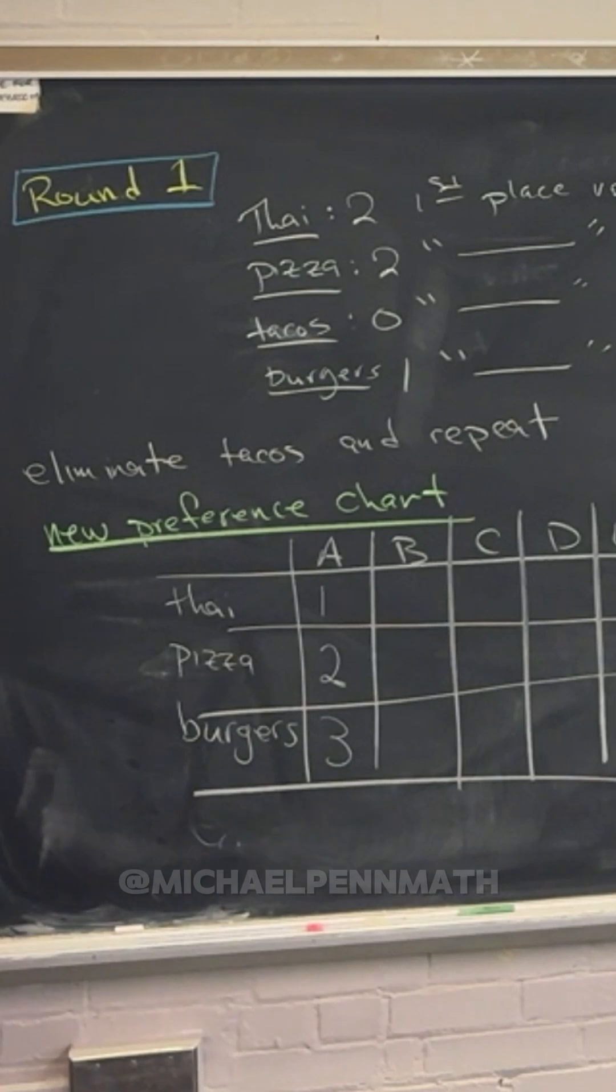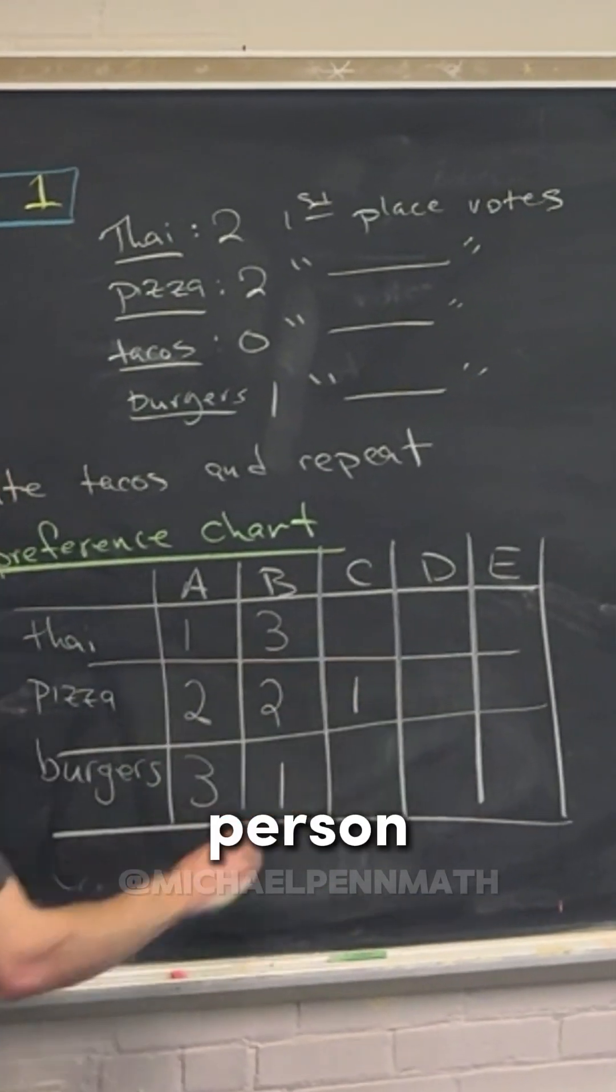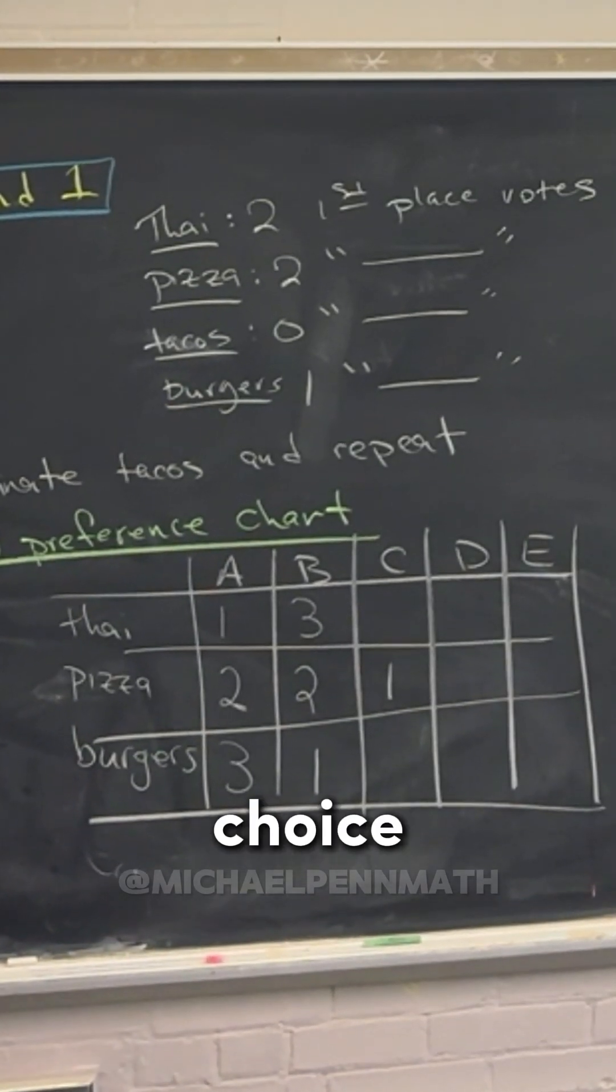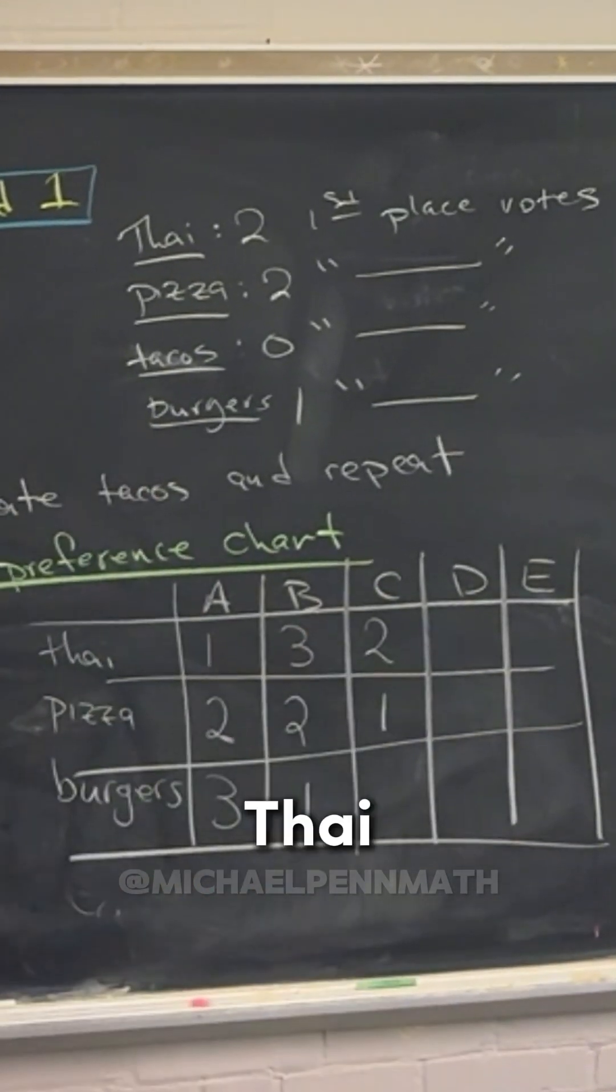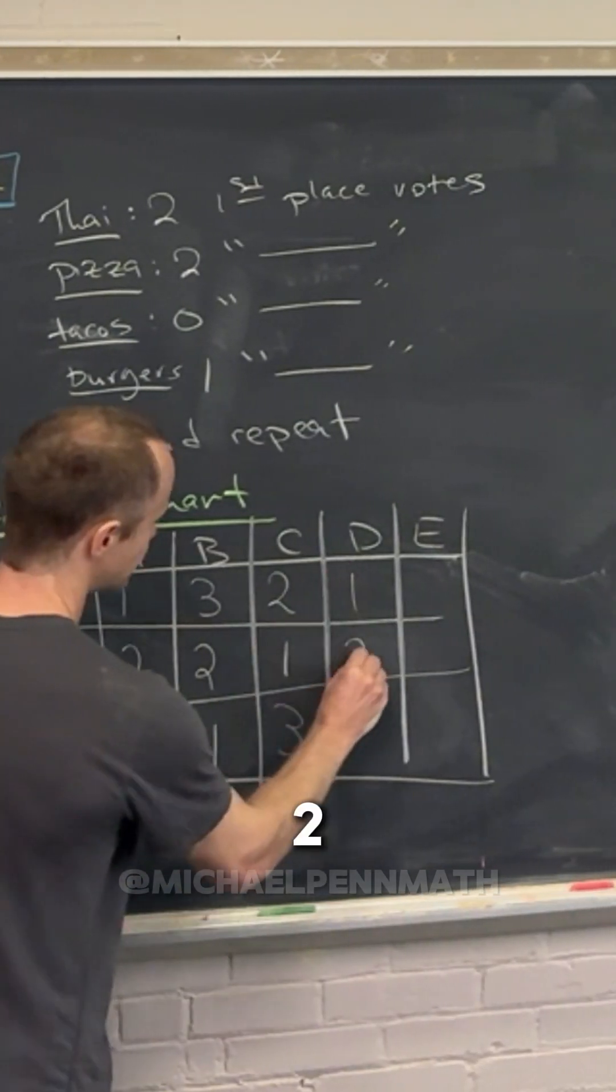Person B ranks tacos fourth place, so that means the numbers don't change, right? So pizza is going to be first place for person C. Person C had tacos as their second choice. So if that's eliminated, their new second choice is Thai, and then their new third choice is burgers.